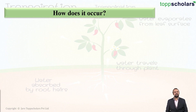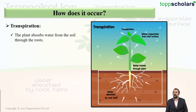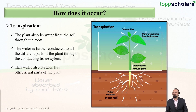Let us see the various steps of transpiration. Firstly, plants absorb water from the soil through their roots. After which, the water is conducted to all the different parts of the plant through the tissue known as xylem — water and various dissolved minerals are conducted through xylem tissue.